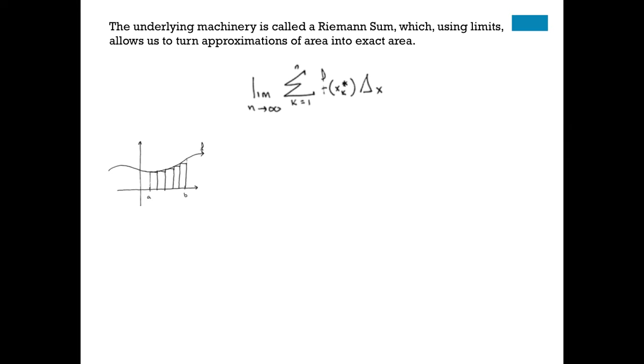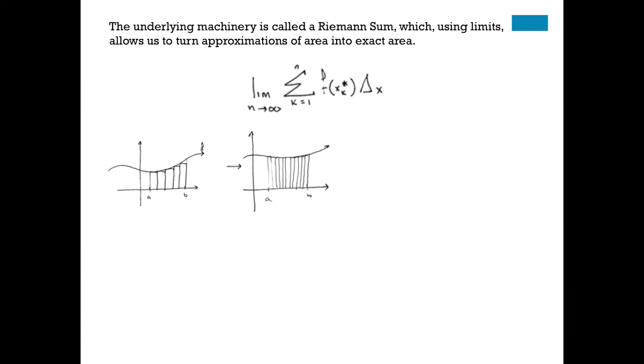Now to get a better approximation, you could double the number of rectangles. Let's pretend that's 10. But if you want the exact area, you want to ask, what happens if I let the number of rectangles go to infinity? And if you do that, you get no gaps, or the same as saying exact area.